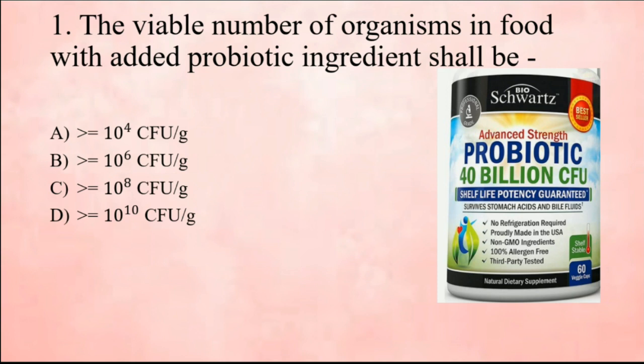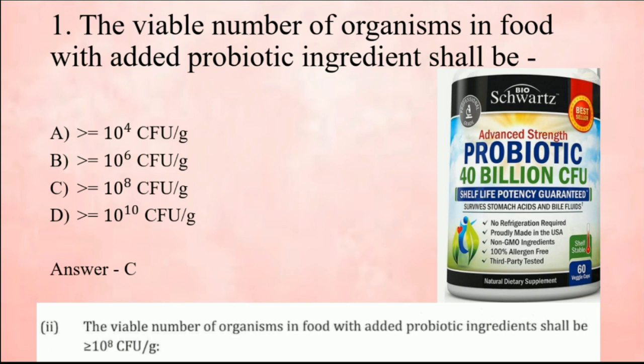The answer is not 10^6 because the minimum recommended effective dose per day to a human being is 10^8 colony forming units per gram. This is the line from the FSS Act which states that the viable number of organisms in food with added probiotic ingredients shall be equal to or more than 10^8 colony forming units per gram.